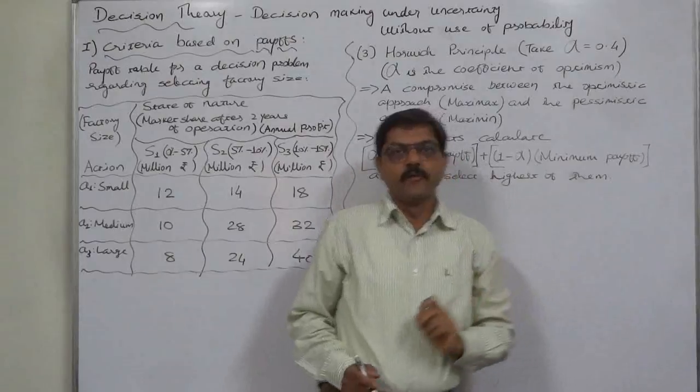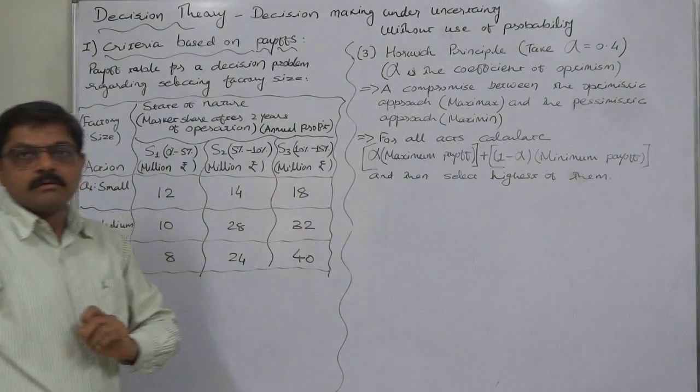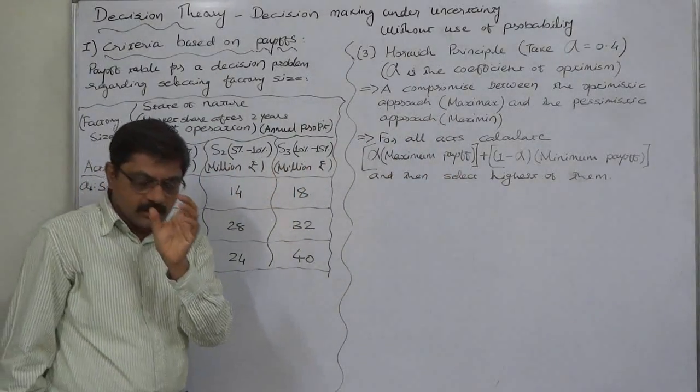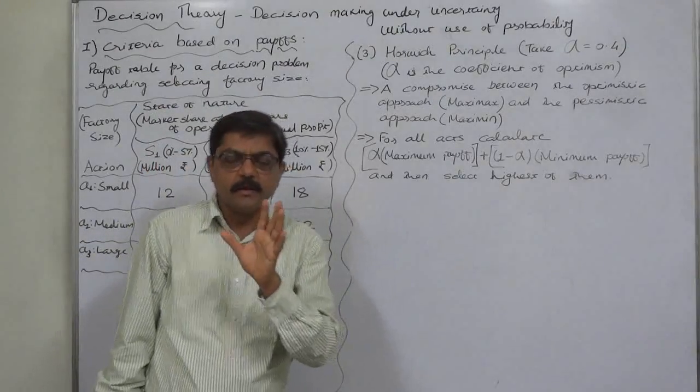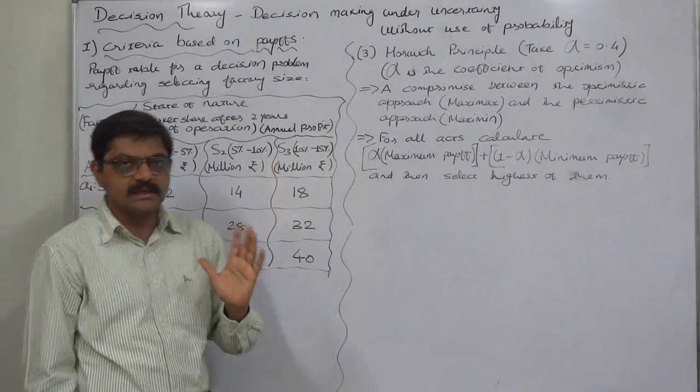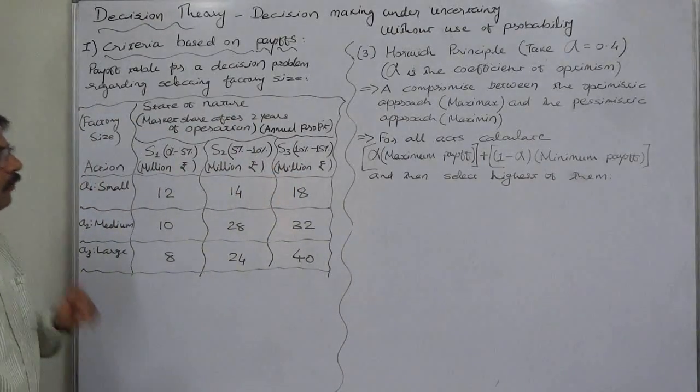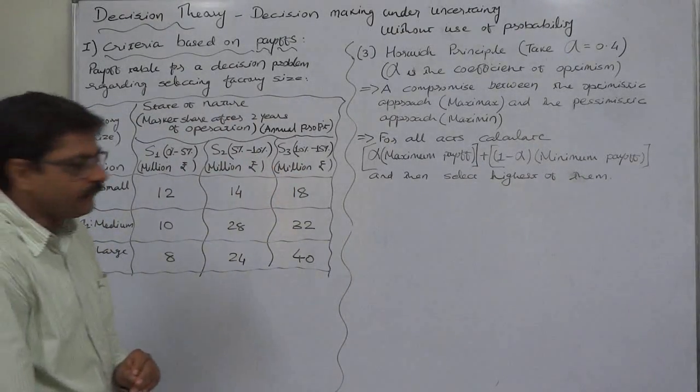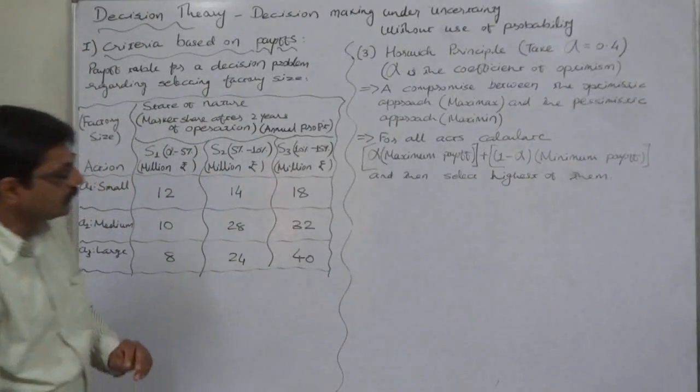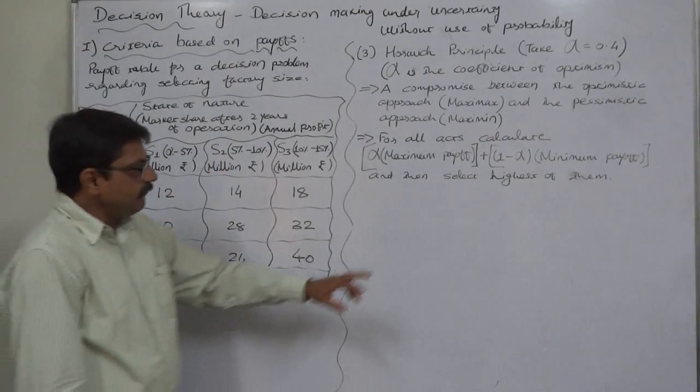In this particular case, we need to take alpha as 0.4, meaning the decision maker is approximately 40% optimistic and 60% pessimistic. Now, what is the exact procedure of arriving at the final conclusion?